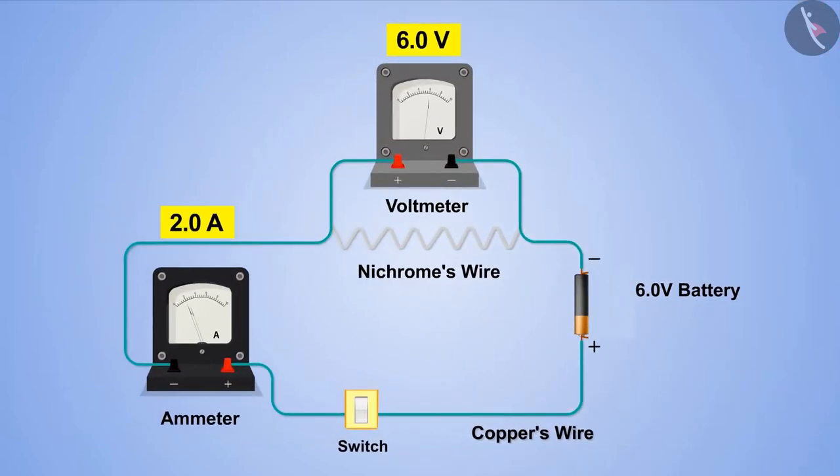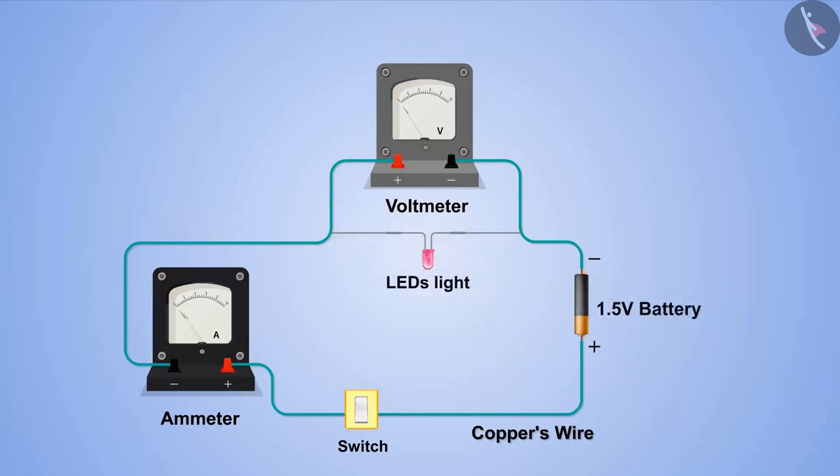What will happen if the nichrome wire is replaced by another resistance, say an LED light? Will the ratio still be the same as it was in the case of a nichrome wire? Let's try this.